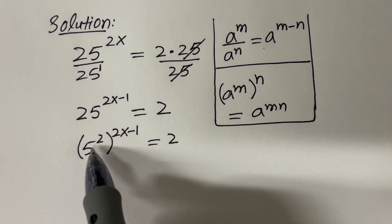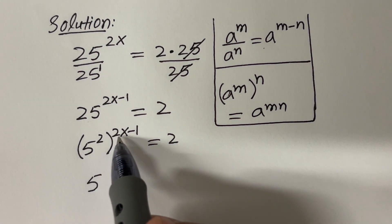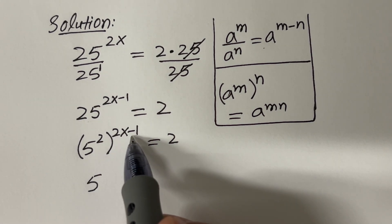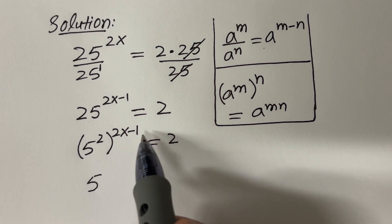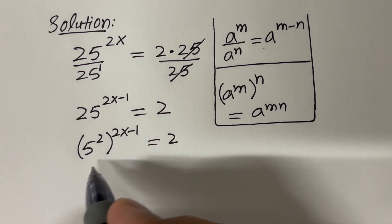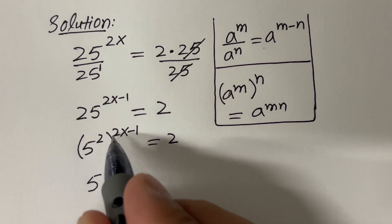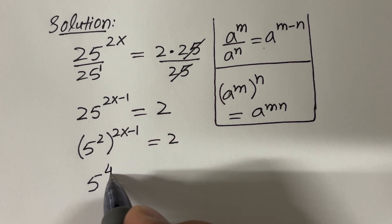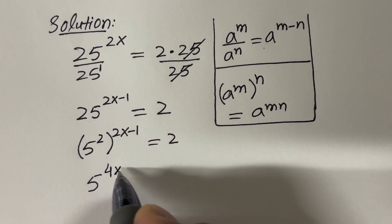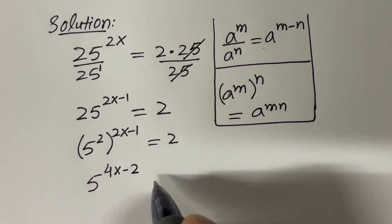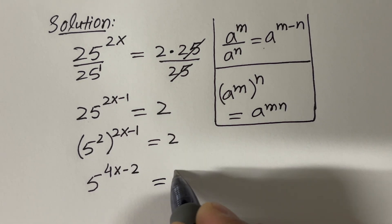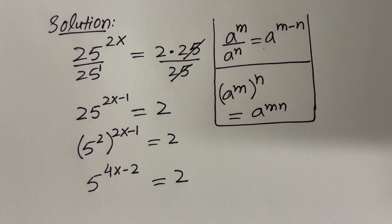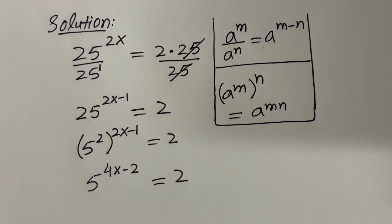Similarly, we have 5 raised to the power 2 raised to the power 2x minus 1. So just multiply the exponents: 2 times 2x gives 4x, minus 2 times 1 is 2, and the right-hand side is equal to 2.